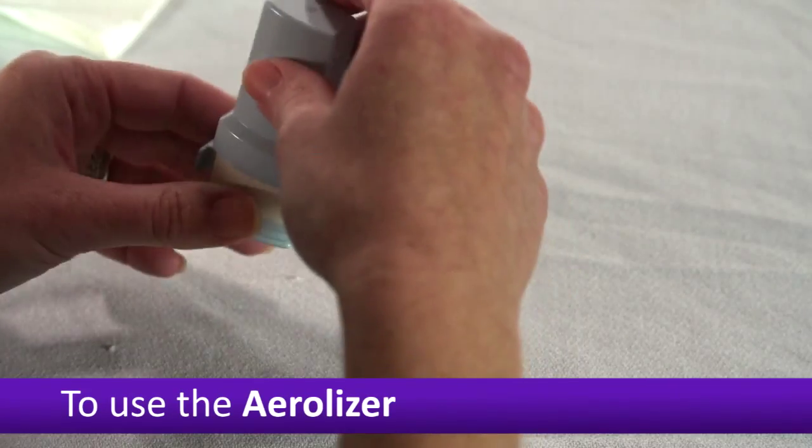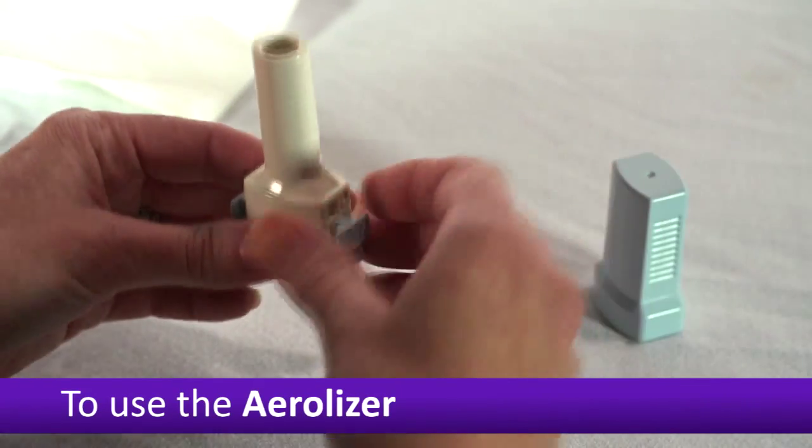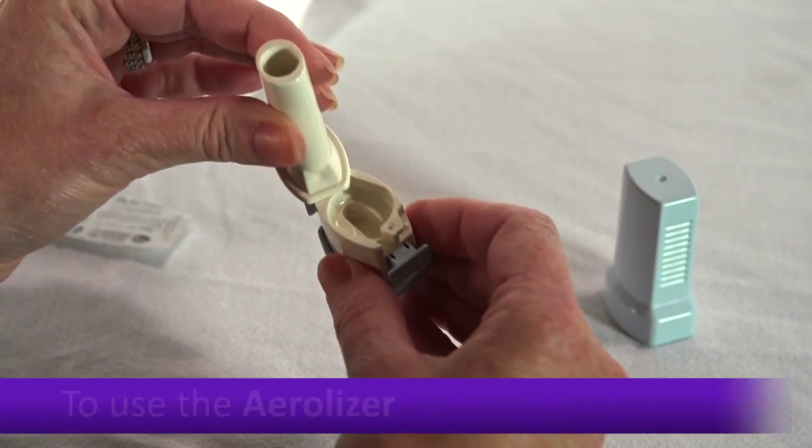To use the Airelyzer, first remove the mouthpiece cover. Twist the mouthpiece open.